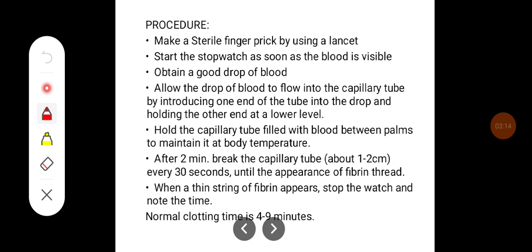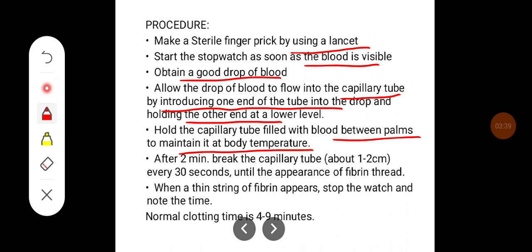Procedure: Make a sterile finger prick using a lancet. Start the stopwatch as soon as blood is visible. Obtain a good drop of blood. Allow the drop to flow into the capillary tube by introducing one end into the drop and holding the other end at a lower level. Hold the capillary tube filled with blood between palms to maintain it at body temperature.